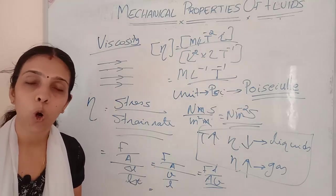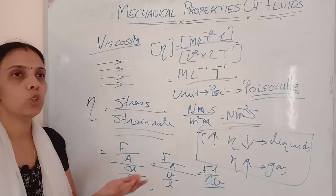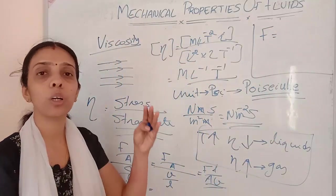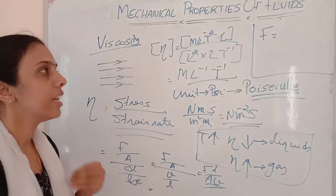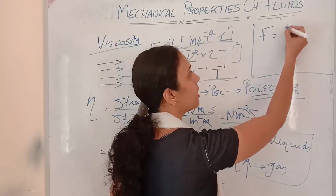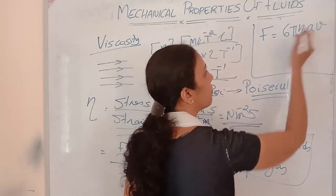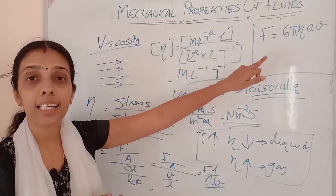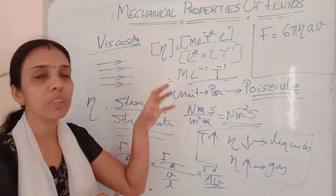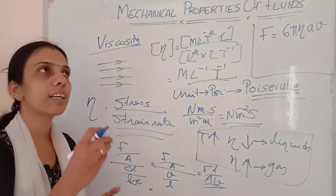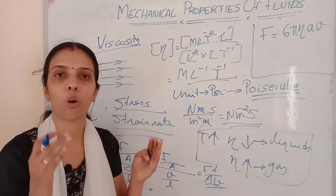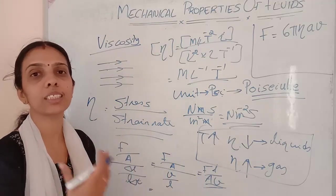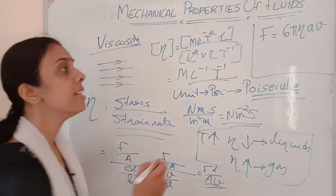Next we study Stokes' Law and terminal velocity. Stokes' Law states that the viscous drag force acting on an object moving through a fluid is F = 6π·η·a·v, where eta is the coefficient of viscosity, a is the dimension of the object, and v is the velocity of the object.